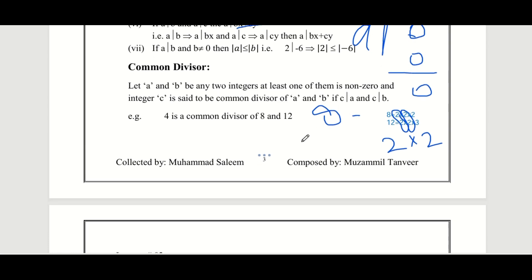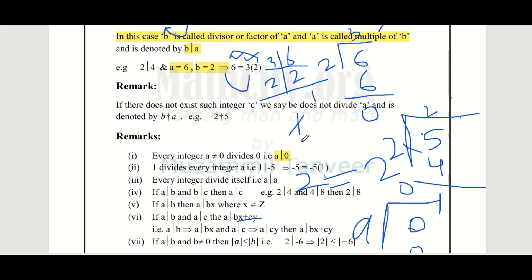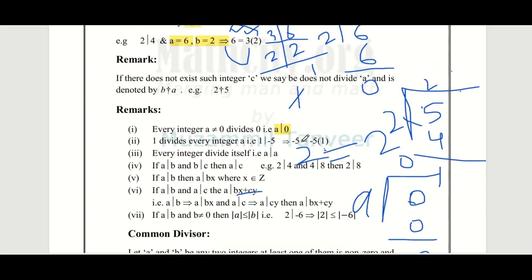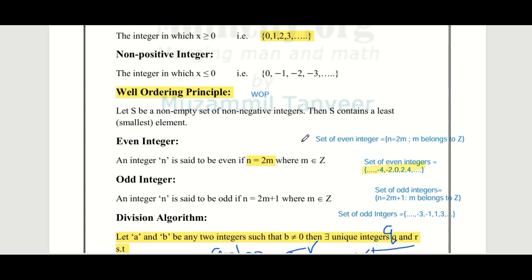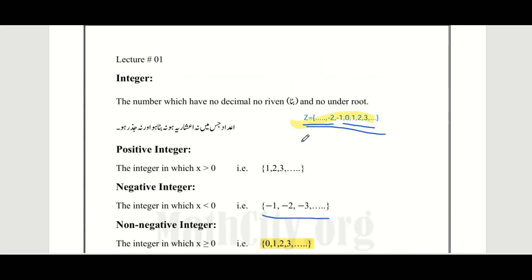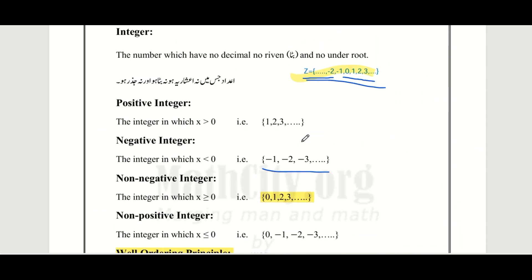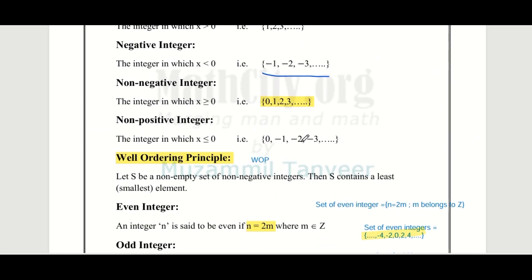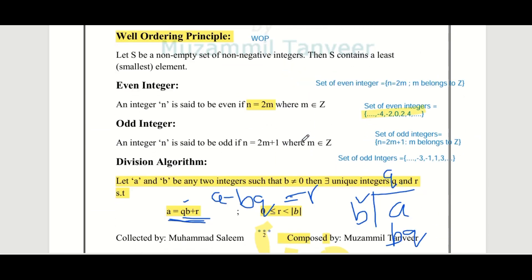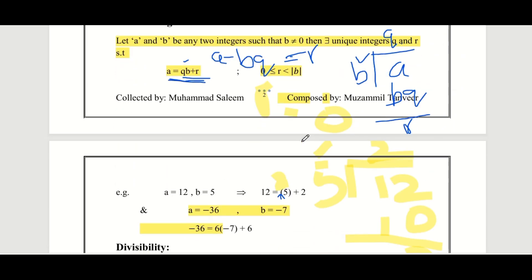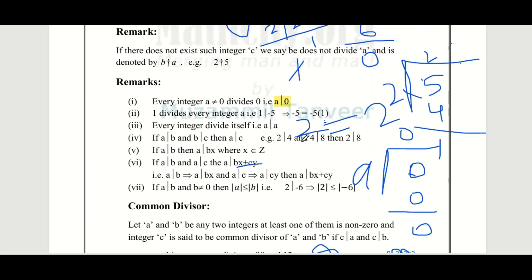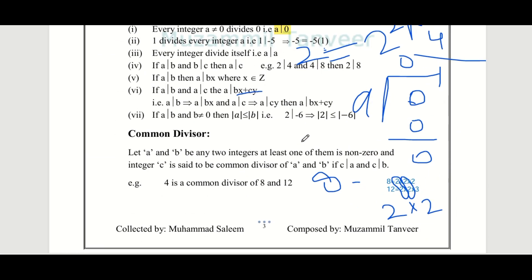The properties of divisibility and common divisors will be discussed with proofs in the next lecture. Today's lecture ends here. In this lecture we discussed basic integer types: set of integers, positive integers, negative integers, non-negative, non-positive, the Well-Ordering Principle, even and odd integers, the Division Algorithm, divisibility, and common divisors. The further properties of divisibility are pending for the next lecture.